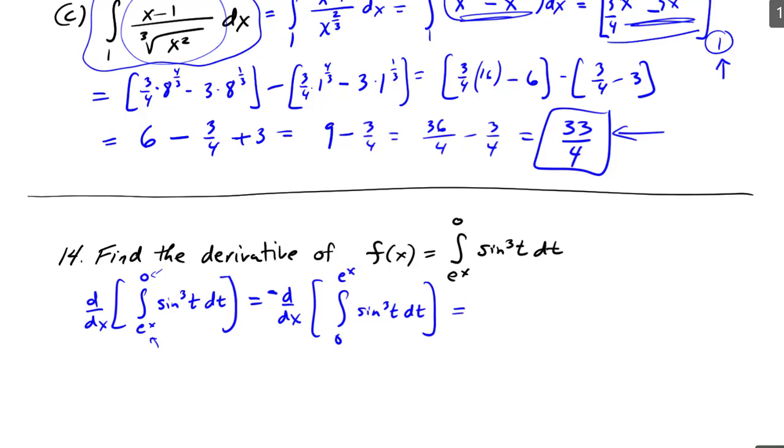Now what I can do is, there's my negative from the flipping, and then I know that the derivative of this integral function should give me this function evaluated at e to the x, so sine cubed of e to the x times the derivative of this, so the derivative of e to the x. So that's just going to give me e to the x.